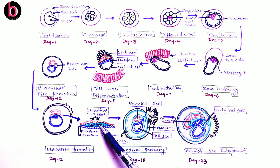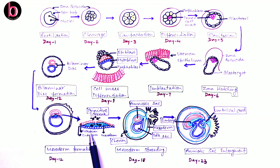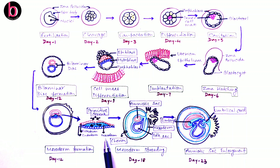The three embryonic layers — ectoderm, endoderm, and mesoderm — are responsible for development of the whole body. The human body has four tissue systems: epithelial, neural, connective, and muscular. Ectoderm is responsible for development of neural tissue system and epithelial tissue system. Mesoderm is responsible for development of muscular and connective tissue system. Endoderm, along with the other two, also contributes to development of the epithelial tissue system.